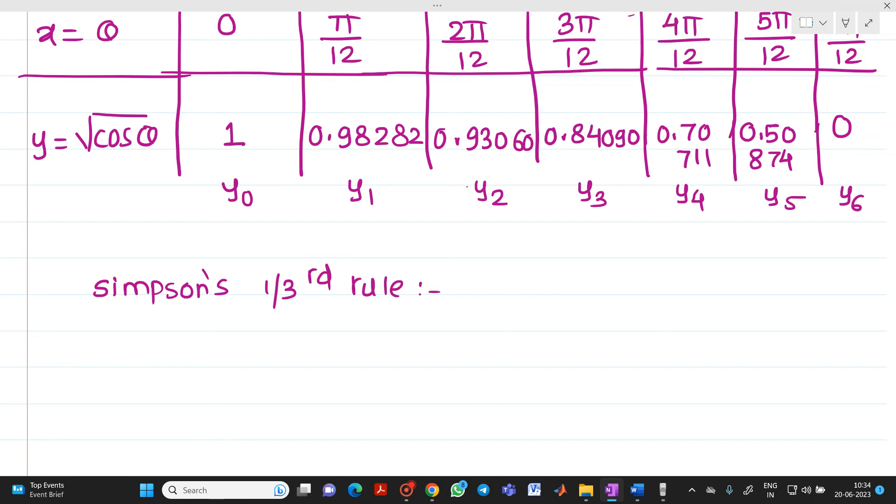So what is your formula? Integration x₀ to xₙ f(x) dx will be equal to h/3 times bracket. Sum of first plus last ordinate, that is y₀ plus y₆